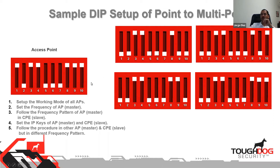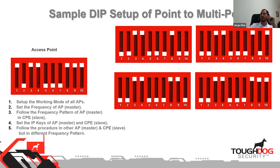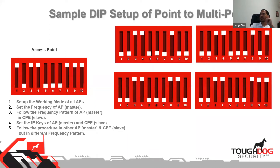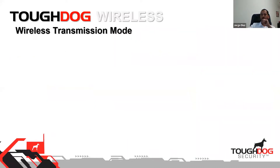If you have a second separate point-to-multipoint group, you would change the frequency on that group so they operate on a different channel and are completely isolated from each other.